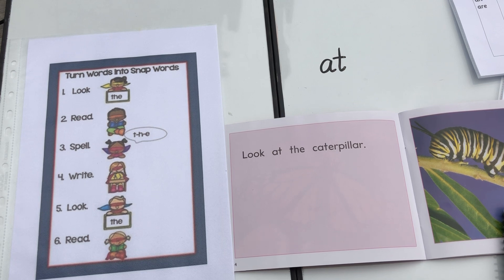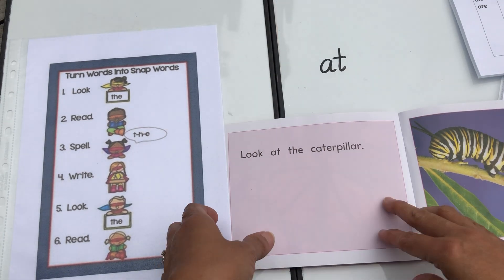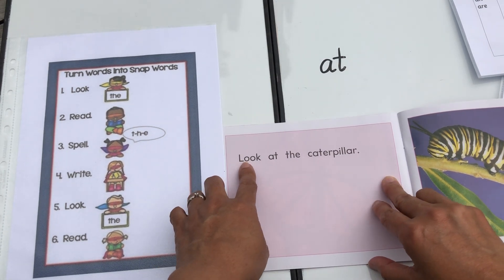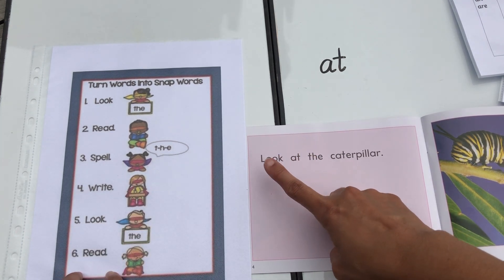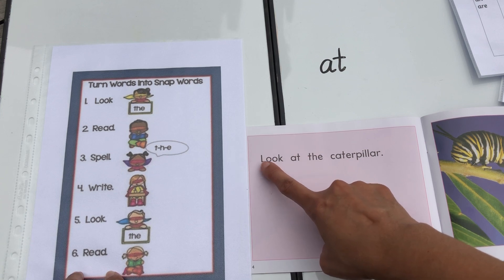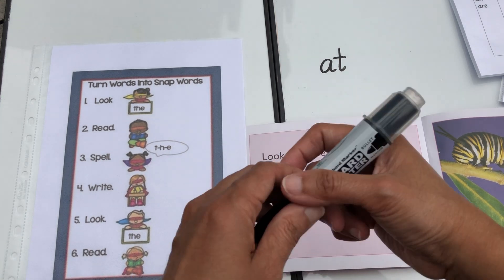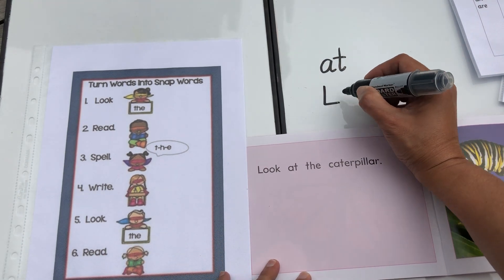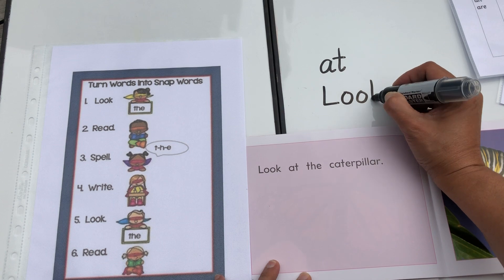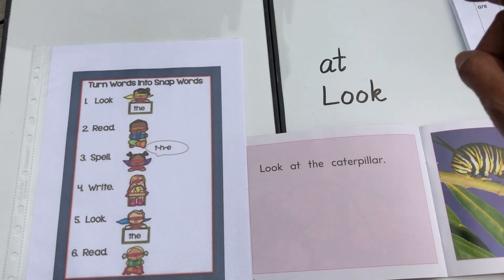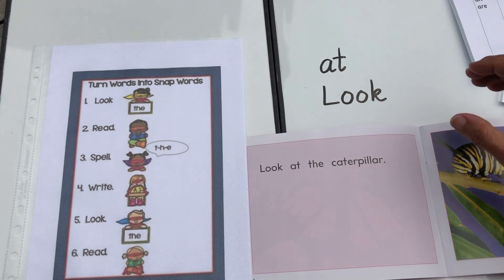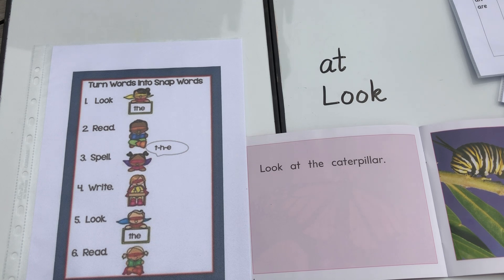Let's try doing another word and making it into a snap word — meaning a word that you can read in a snap, in a quick glance. Let's look at the word 'look.' So look at the word, look. Read it — look. Spell it — L-O-O-K. Now try to write it — look, L-O-O-K. And then you look at the word 'look' again, and then read — look. And then get it and put it in your pocket.